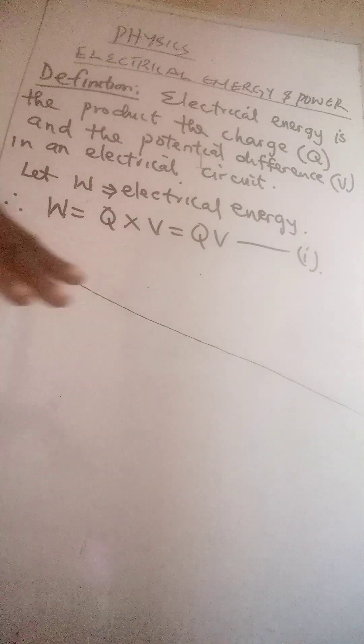Let's have a look at electrical energy and power today. What is electrical energy? From the definition written on the board, it is the product of the charge Q, which is measured in coulombs, as we mentioned in our previous video, and the potential difference V, also discussed in our previous video. When we find the product of the two parameters, we have electrical energy. The unit of energy is joules — whatever type of energy it is, the unit is joules.